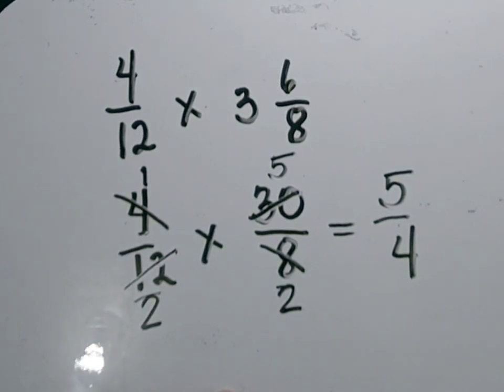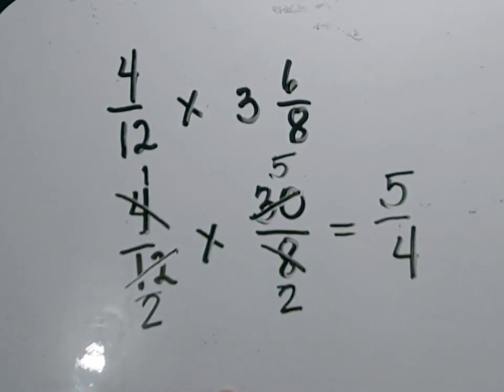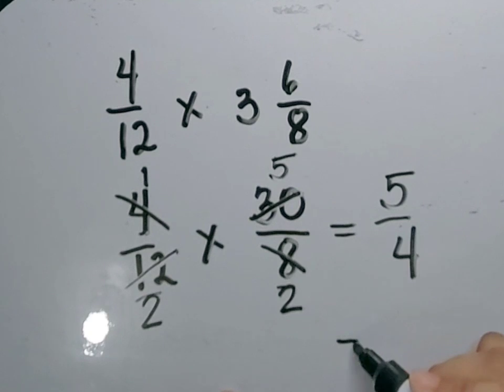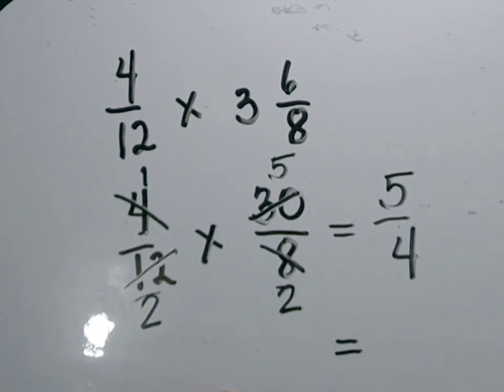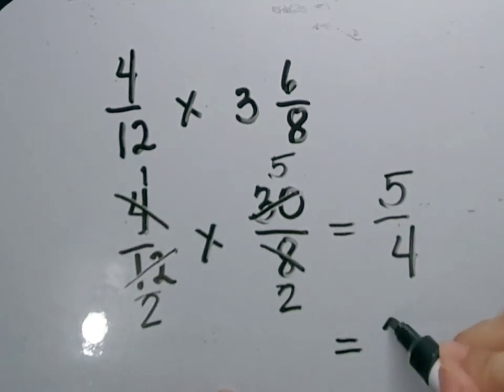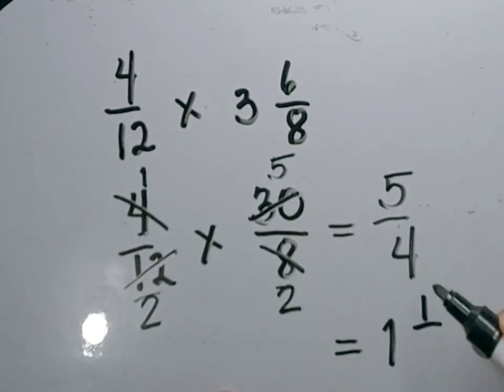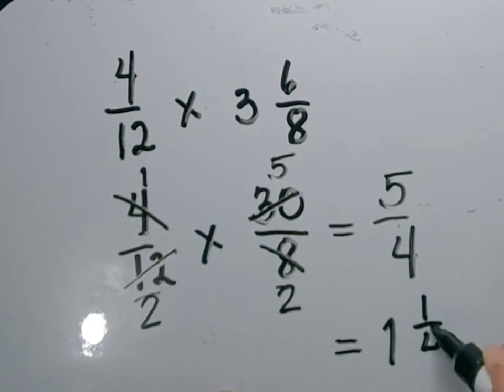The next step is to express our answer in simplest form. 5 over 4 is 1 and 1 fourth.